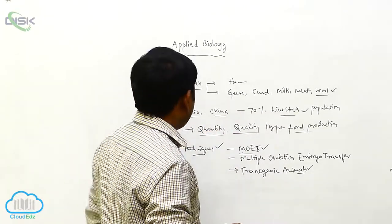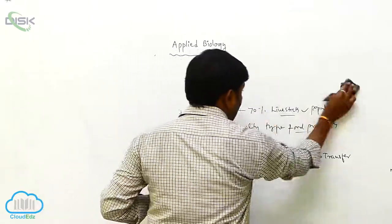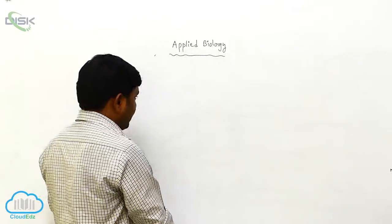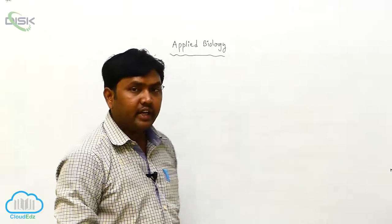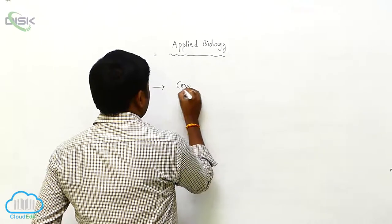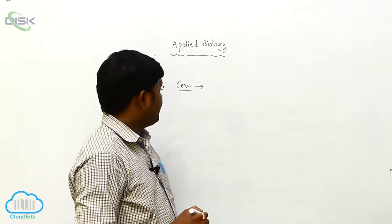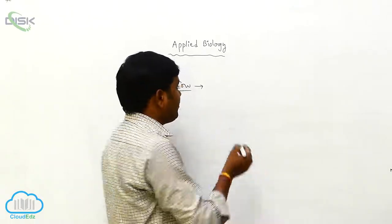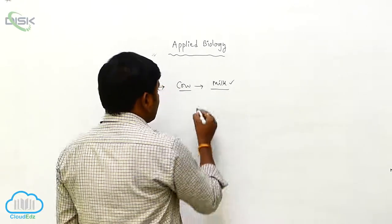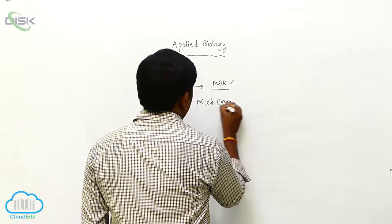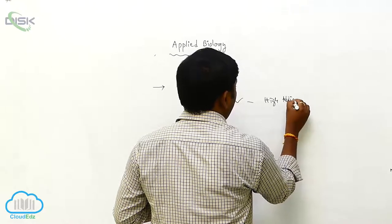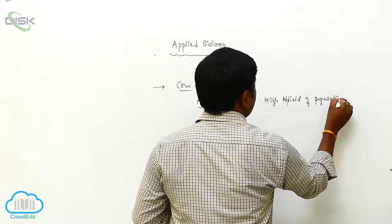In India we use these types of techniques or methods for producing high yield populations in certain organisms like cows, which generally give a limited amount of milk. We provide milk cows so they produce a high yield of milk and milk products.